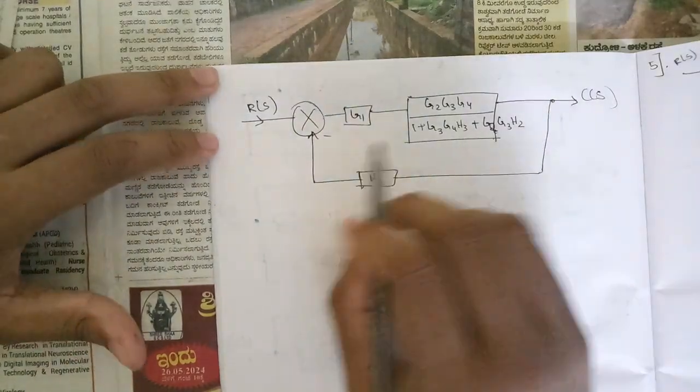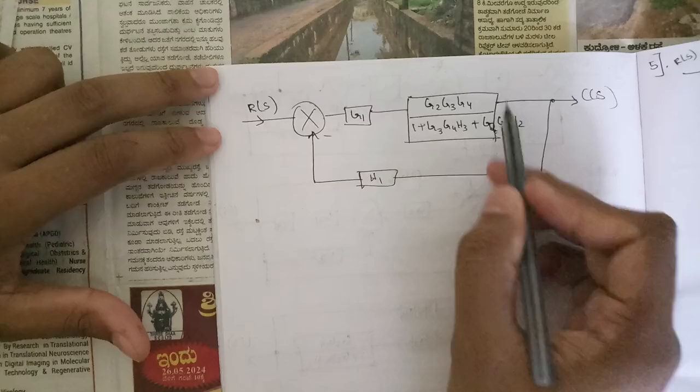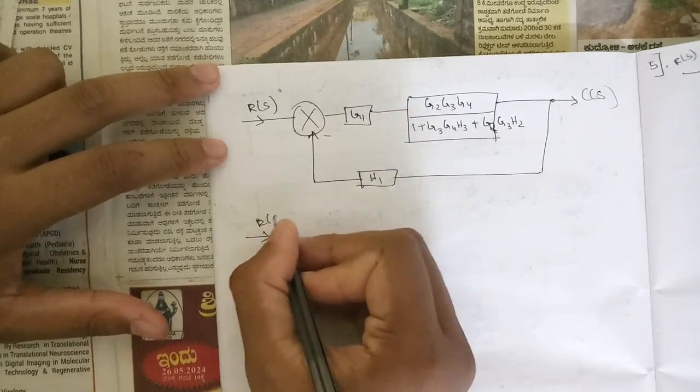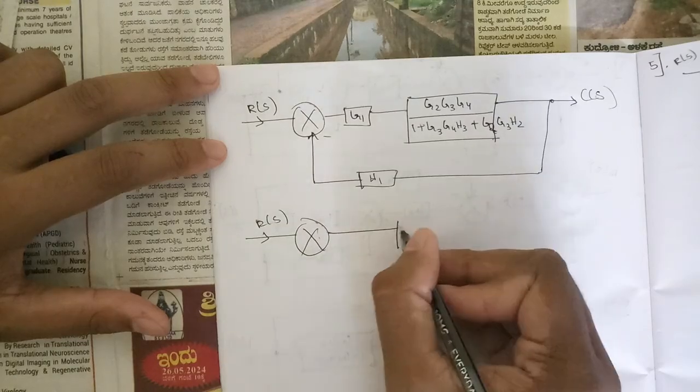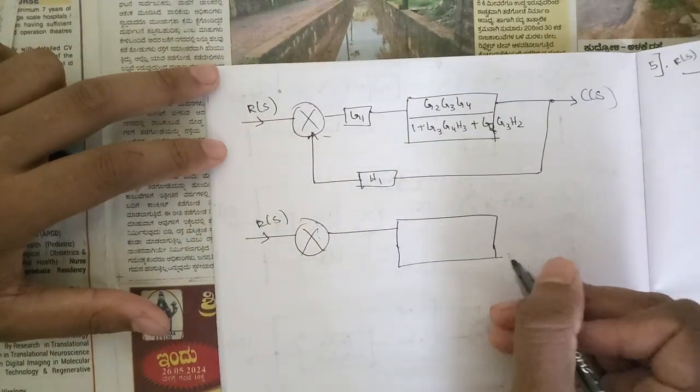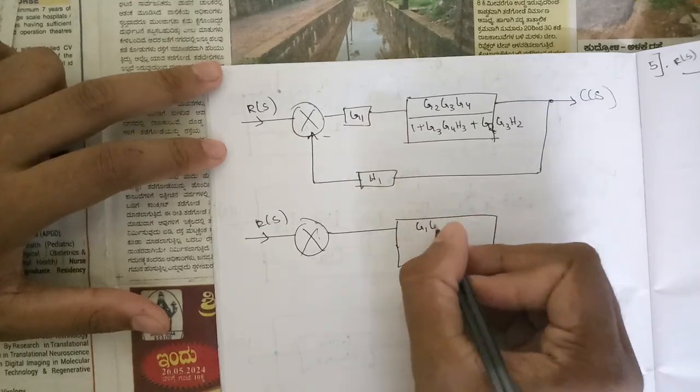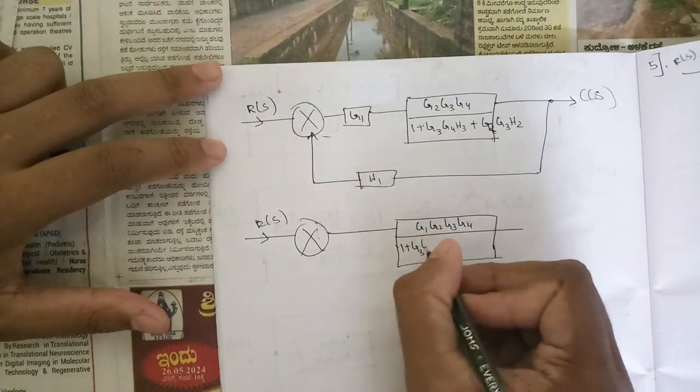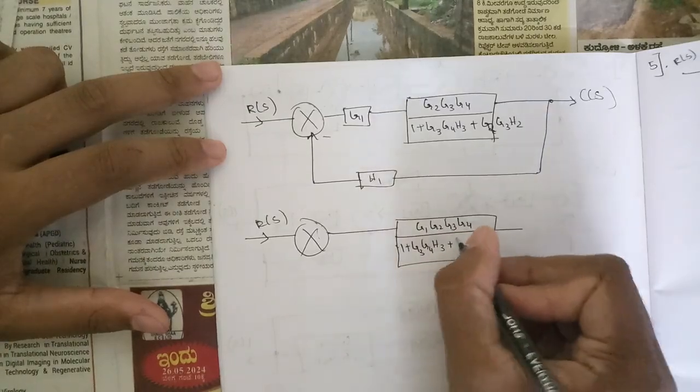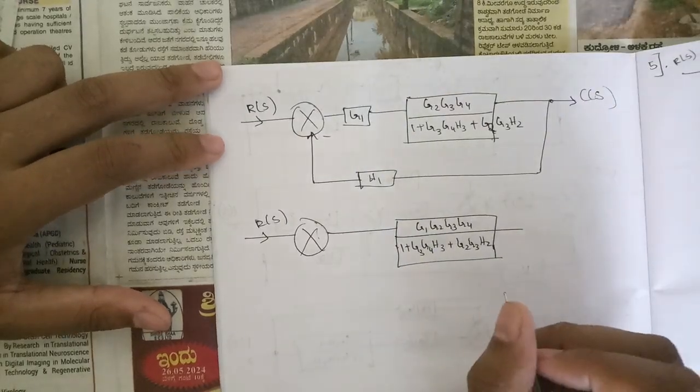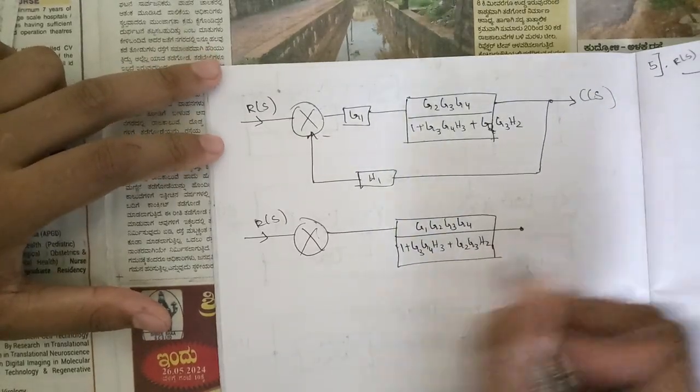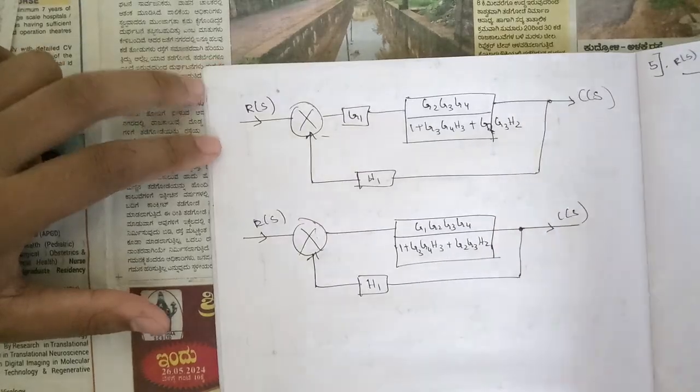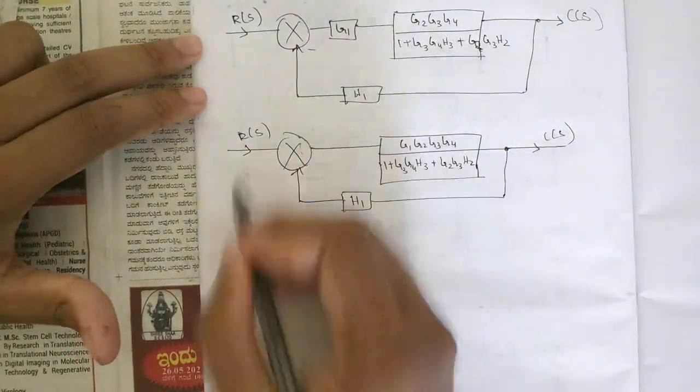Yeah, so here I have reduced that by cancelling the denominator out and this is the remaining term. So again here we can see that these two are in series, convert it into a single block. That is G1, G2, G3, G4 divided by one plus G3, G4, H3 plus G2, G3, H2. Check it here. Here we have H1, output. So here this is again a final minor loop.